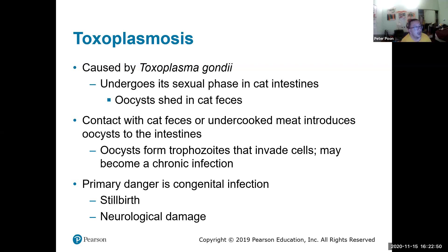Toxoplasmosis is caused by Toxoplasma gondii. These organisms are found in cat feces. The primary danger is congenital infection, which causes stillbirth or neurological damage. This is the main reason pregnant women shouldn't have cats. Even if they do have cats, the pregnant woman should not be the one scooping feces out of the litter box, because that is what introduces toxoplasmosis.